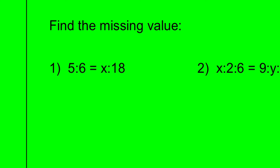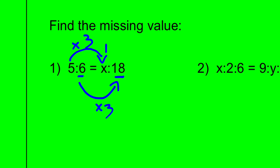We can use this idea to solve ratio puzzles and find missing values. We have equivalent ratios — we know they're equivalent because of the equal sign. Looking at the second terms: to go from 6 to 18, I multiply by 3, meaning the second ratio is 3 times the size of the first. So to find x, I multiply 5 by 3, which gives me 15. The value of x is 15.